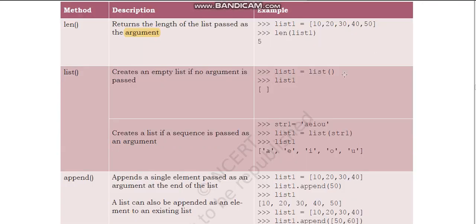The next method is list(). It creates an empty list if no argument is passed. For example, list1 = list() — here you have not mentioned any contents, so the output is an empty bracket, meaning list one is created but has no elements inside it.